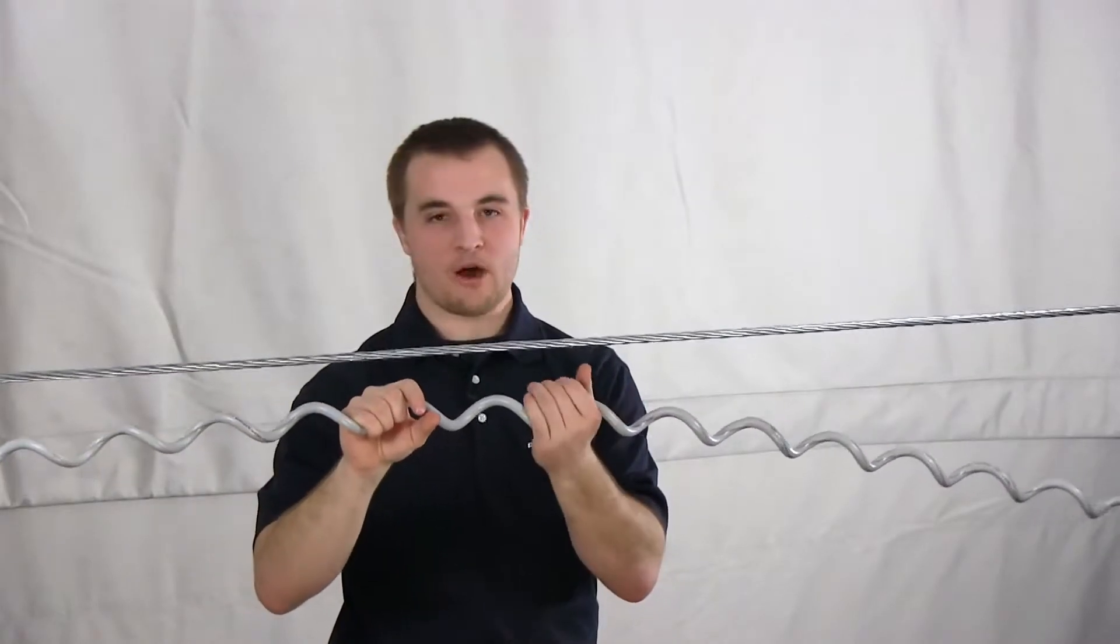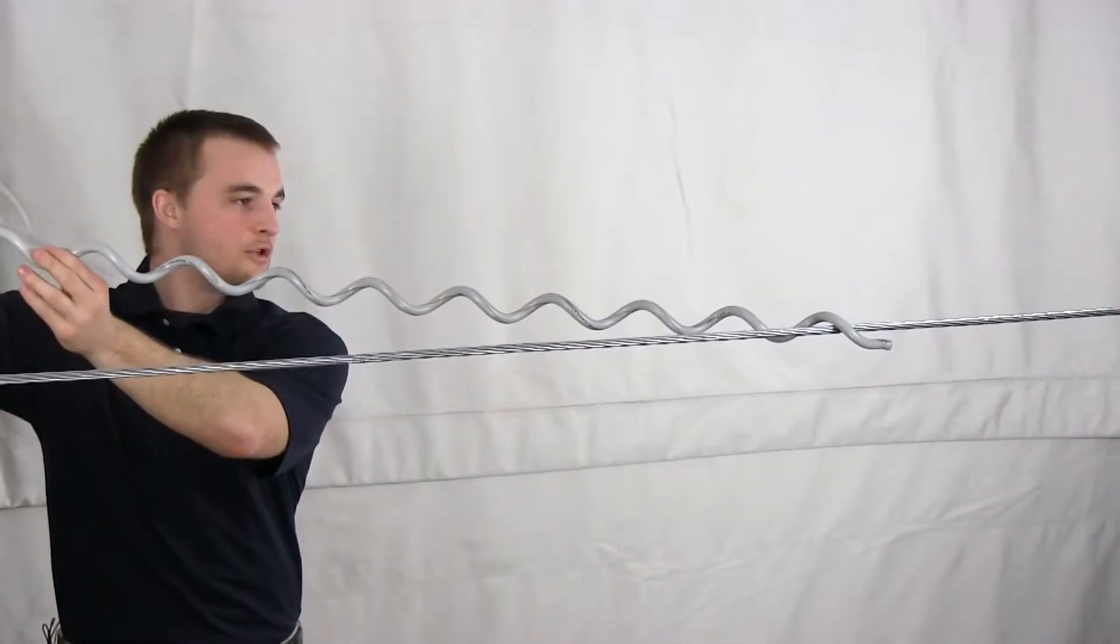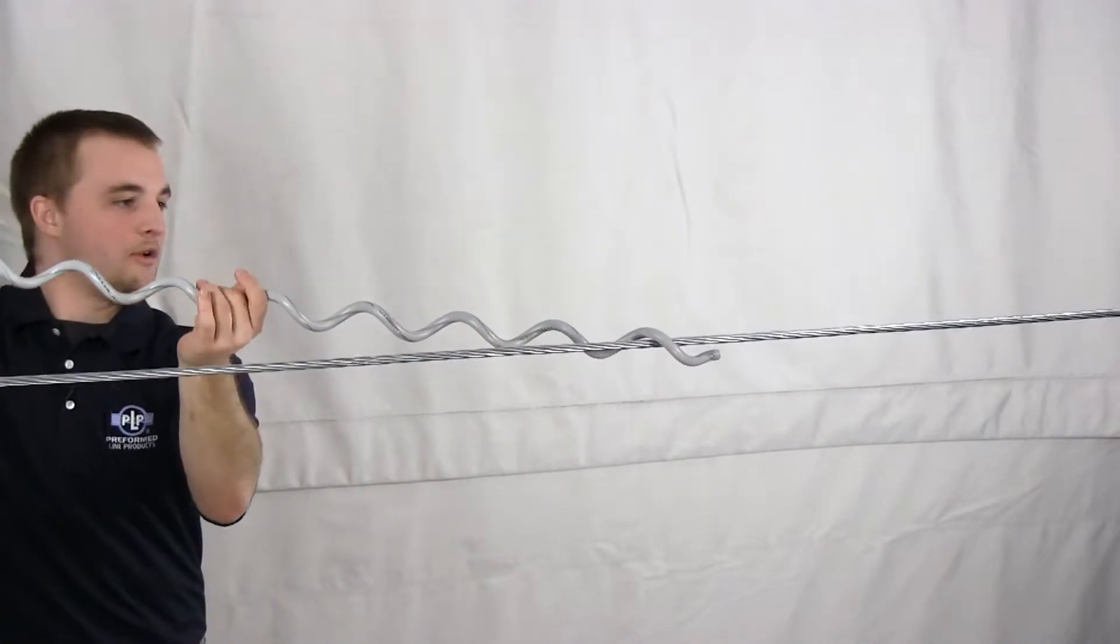Simply grab the spiral vibration damper in the middle of the damping section and rotate it clockwise onto the conductor.